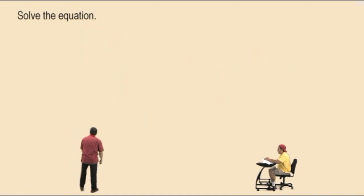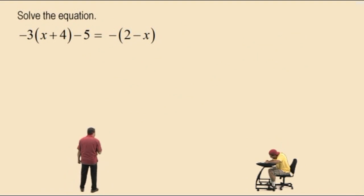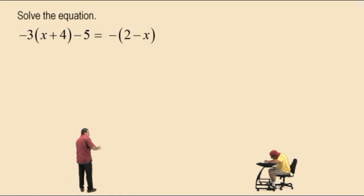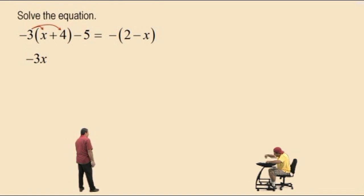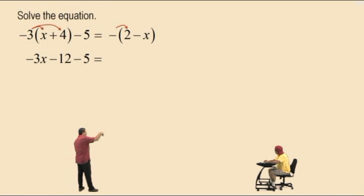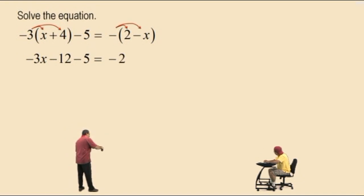All right, Charlie, let's do another one. Negative 3 times the quantity x plus 4, subtract 5, equals negative 1 times the quantity 2 subtract x. All right, Charlie, so first we're going to get rid of our parentheses by using what property? Distributive property. That's right. So up here, negative 3 times x is negative 3x. What's negative 3 times a positive 4? Negative 12. That's right. Bring down your negative 5. Now the right-hand side — what's negative 1 times 2? Negative 2. And what's negative 1 times negative 1x? Positive x. Positive 1x. That's right.